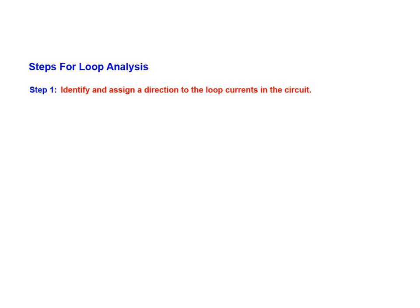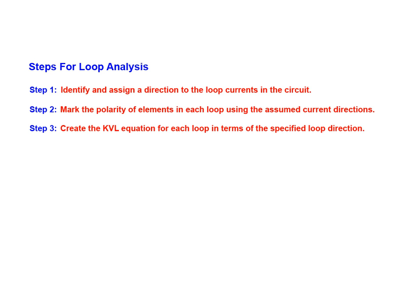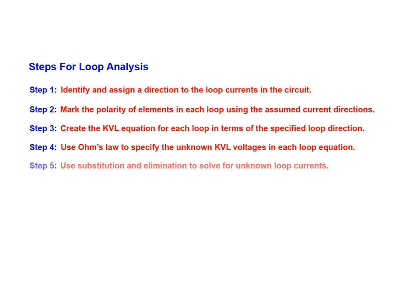There are six general steps required for performing loop analysis. The first step is to identify and arbitrarily assign a direction to the loop currents. Next, we mark the polarity of the elements in each loop. In step three, we create the KVL equation for each loop. We then use Ohm's law to specify the unknown KVL voltages in terms of current and resistance. Once we have the KVL voltage expressions, we use substitution and elimination to solve for the unknown loop currents. The process is completed by using the loop currents to calculate resistor current and voltage throughout the circuit.